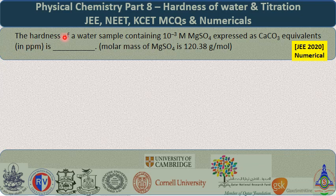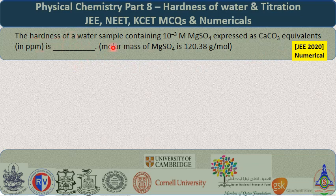The question is: the hardness of a water sample containing 10⁻³ moles of magnesium sulfate, expressed as calcium carbonate equivalents in ppm, is how much? The molar mass of magnesium sulfate is 120.38 gram per mole. This appeared in the recently concluded JEE 2020 examination. It is a numerical value question — you have to write the numerical value you obtain on solving this problem.